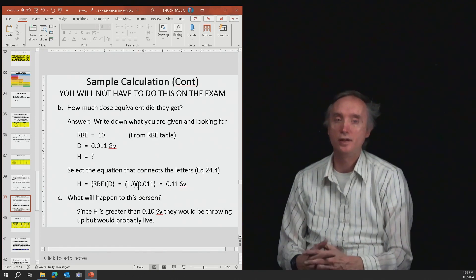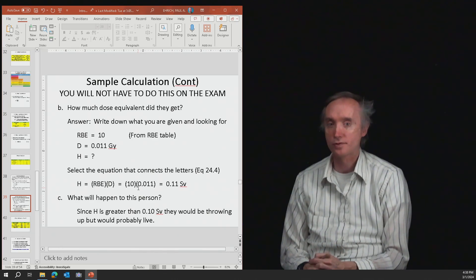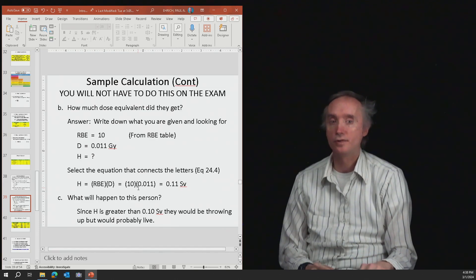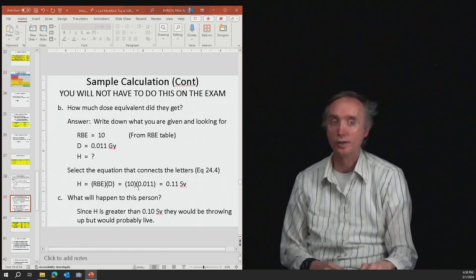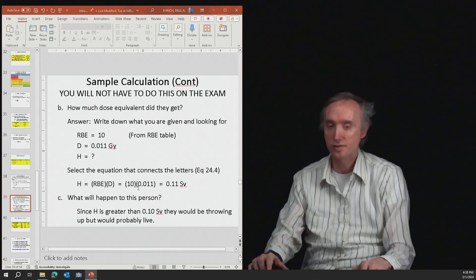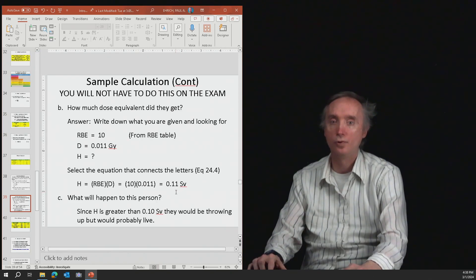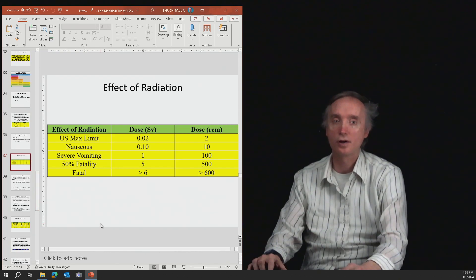Okay? Part C. What will happen to this person? So H is greater than 0.10 sieverts. So they would start to throw up, but they would probably live. So you would look this up. We've got 0.11, and then we would go back to this chart here to determine what the fate of the person would be.